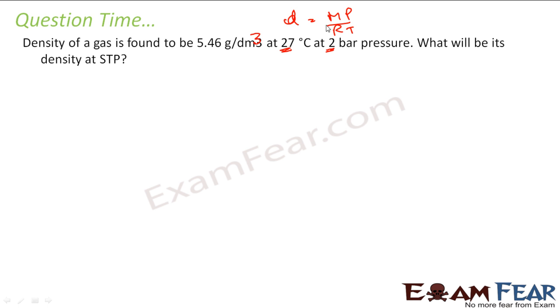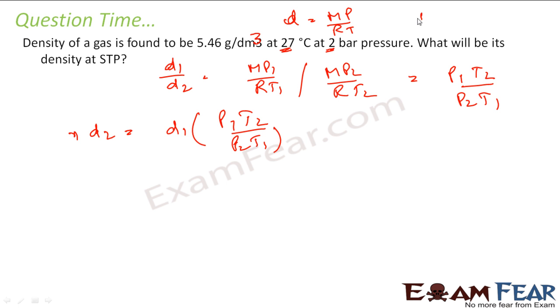So, in this case, if you see, m will be same, P is varying, T is varying, R is same. So, if my density is this, I can say that d1 by d2 is equal to mP1 by RT1 divided by mP2 by RT2 and that is nothing but P1T2 by P2T1. In that case, if I write the formula for d2, d2 will be d1 into P2T1 by P1T2. So, here my case 1 is the case given and case 2 is my STP and case 1 is my 27 degrees Celsius 2 bar pressure.